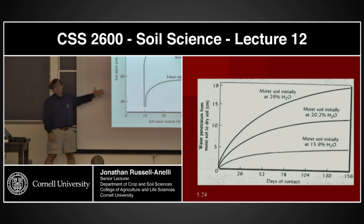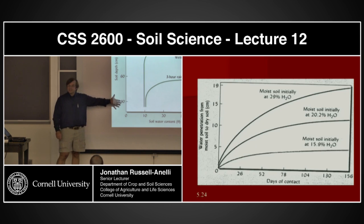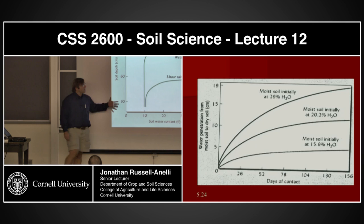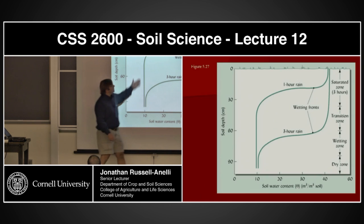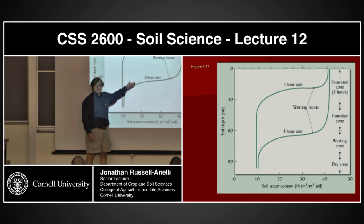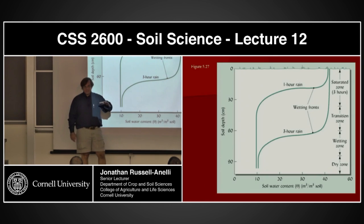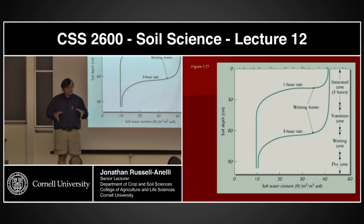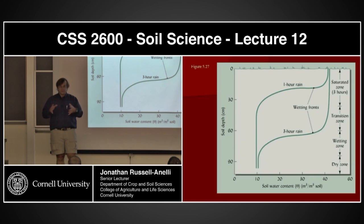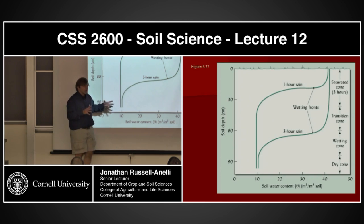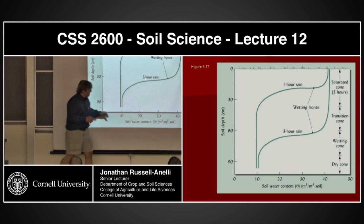Which comes back to this slide — now this slide makes more sense. We have a wetting front, an hour wetting front, and a three-hour wetting front. We're looking at mass flow, and in the real world we have preferential flows and all different other kinds of things going on. But imagine this is just mass flow.